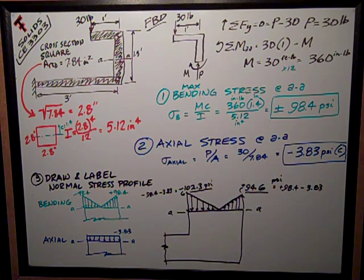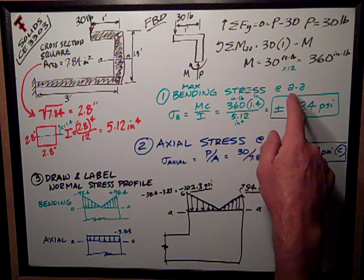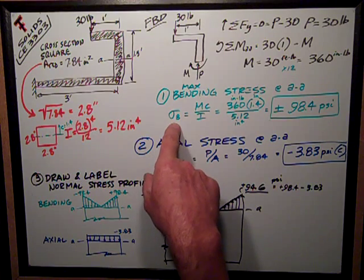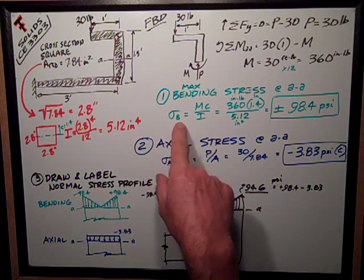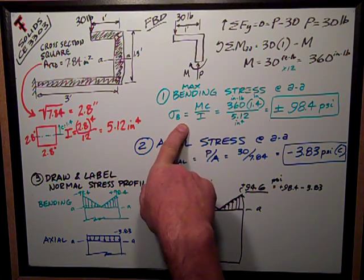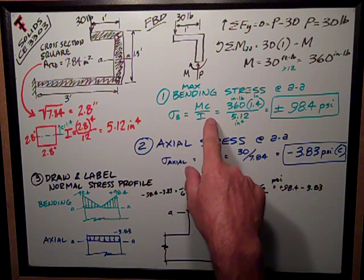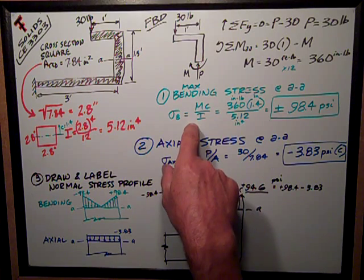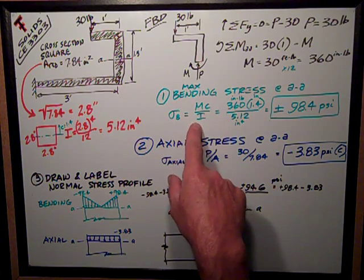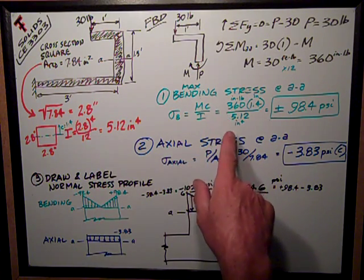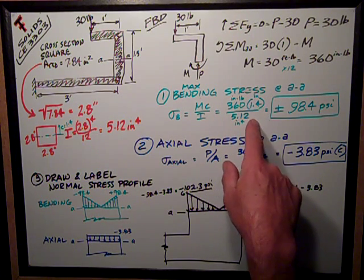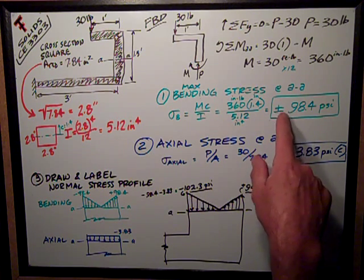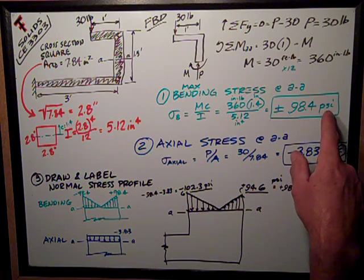The first question is, what's the maximum bending stress at AA? That's just the flexure formula, it was on the formula sheet. Bending stress is equal to MC over I. M is the moment, C is the distance to the extreme fiber from the neutral axis, and I is the moment of inertia. Plug in the numbers, 360 times 1.4 divided by 5.12 is equal to plus or minus 98.4 psi.